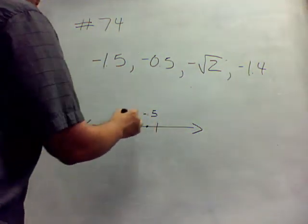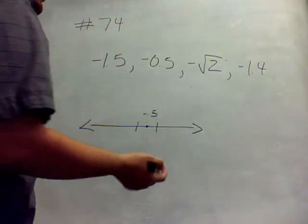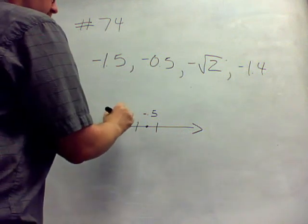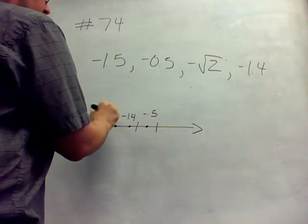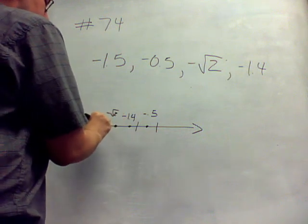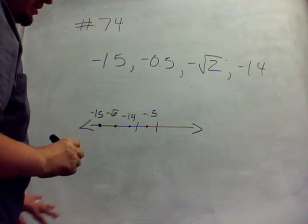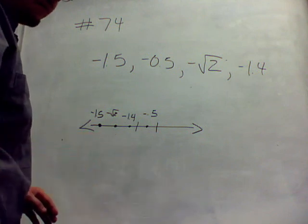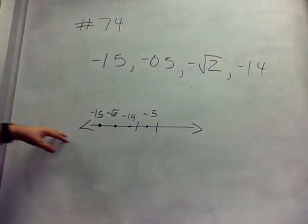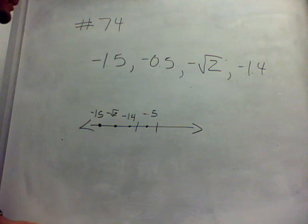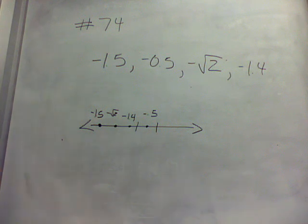Then we have negative square root of 2 is negative 1.4 or something. Negative 1.4 would be next in line, and then negative square root of 2, and then negative 1.5. The numbers go larger in the negative direction, and that means they actually become smaller. Seeing as all these numbers are negative, the larger they are, the smaller they are. So negative 1.5 is actually the smallest, and negative 0.5 is the largest. That's all you have to do for number 74.